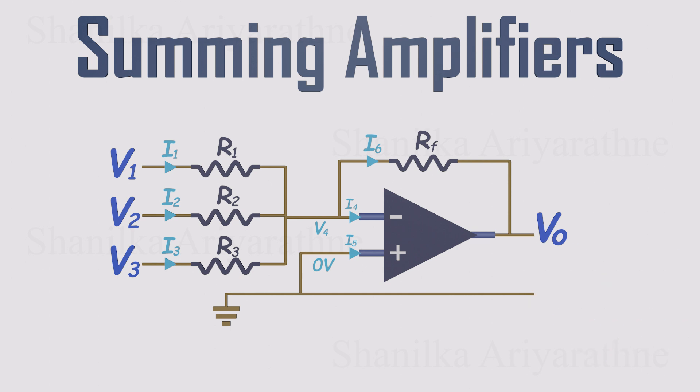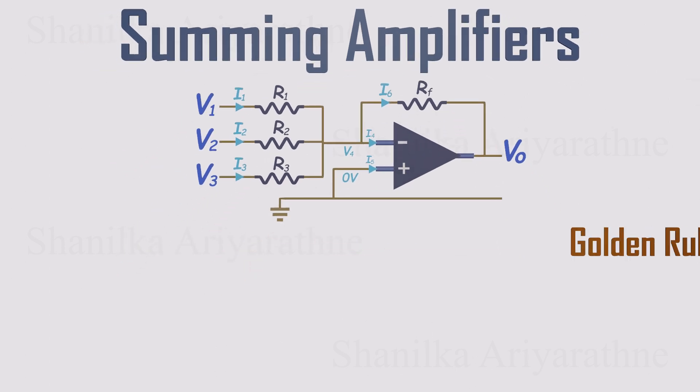Great, everything's labeled. Now we can run the analysis in a few crisp steps. Because this circuit uses negative feedback, the golden rules apply.